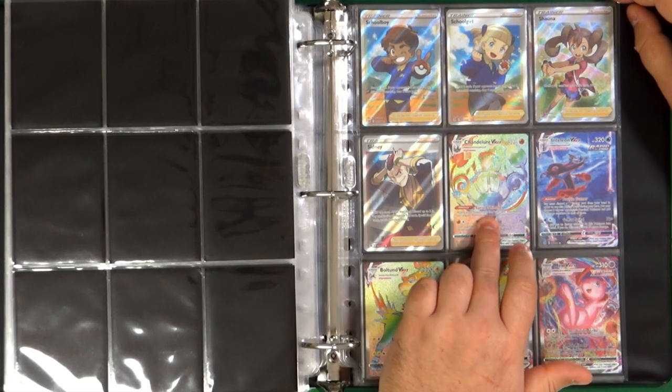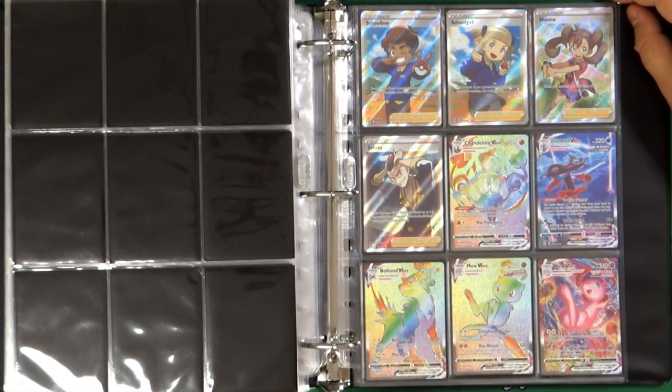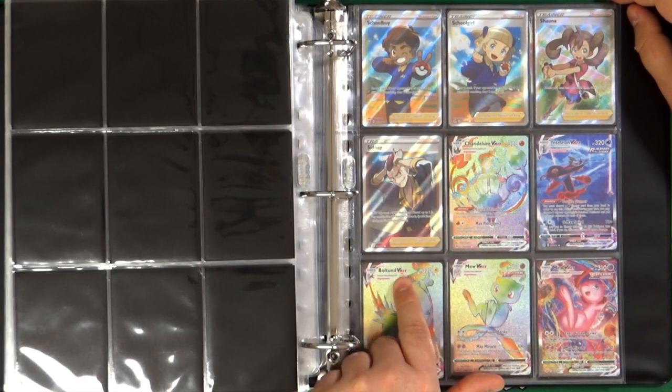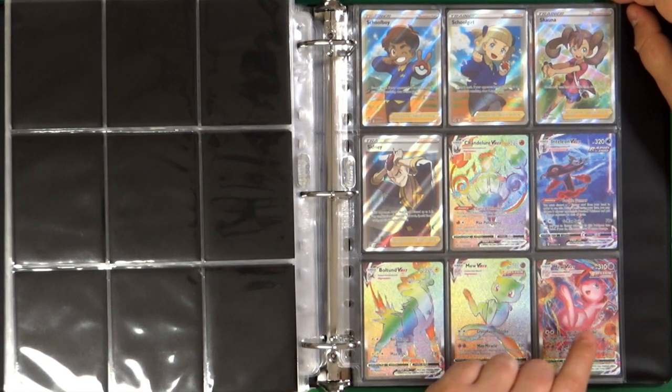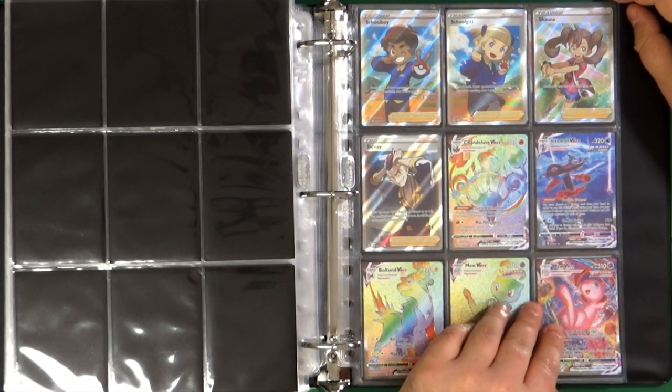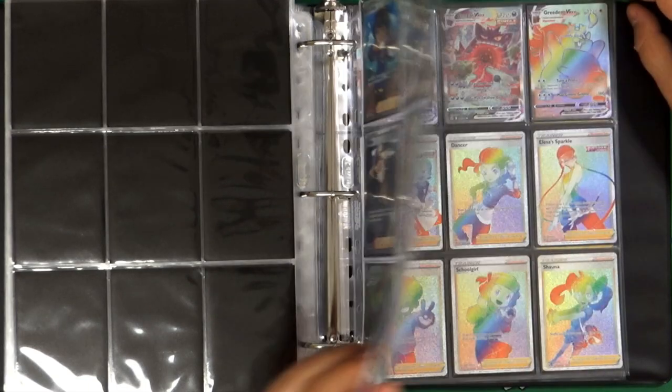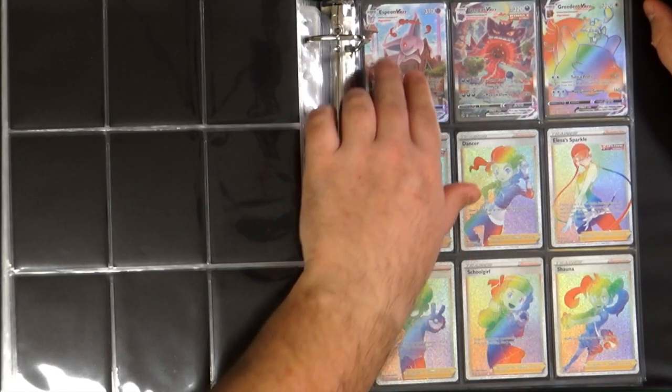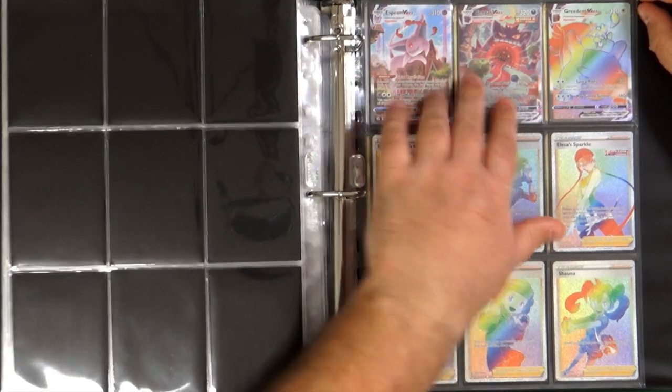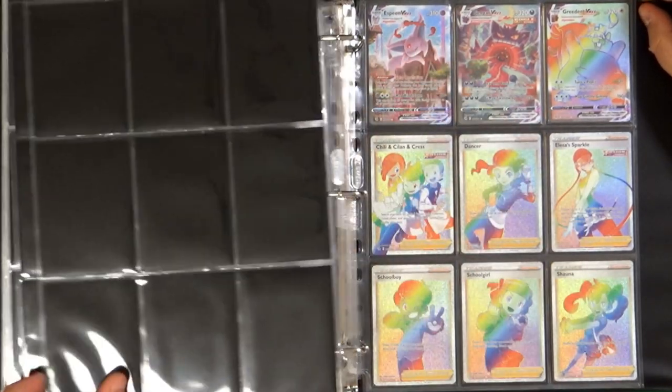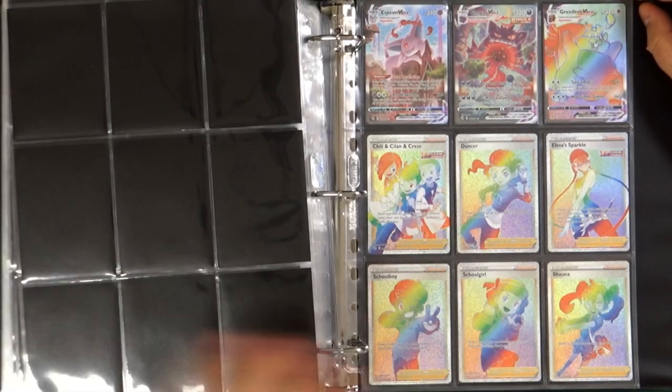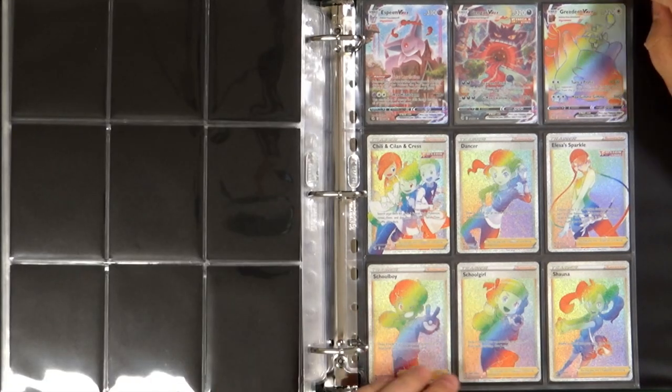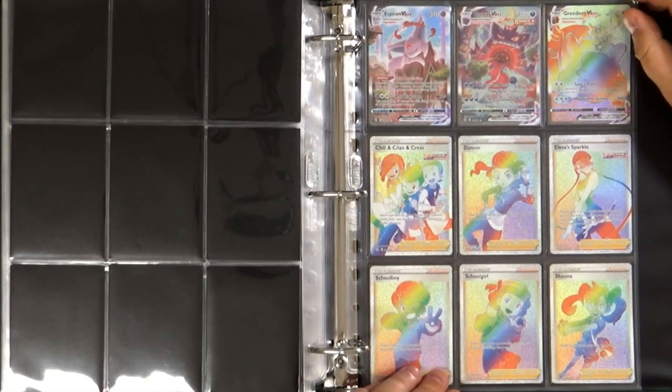Chandelure VMAX, Inteleon VMAX Alt Art, Boltund and Mew VMAX. The Alt Art of Mew VMAX. Here we have a sequence of Alt Art VMAX. We have Espeon, Gengar, and before we had Mew. All Alt Arts in a row. Greedent VMAX.